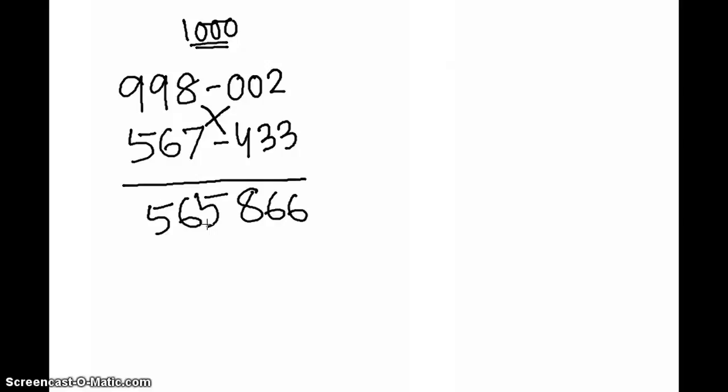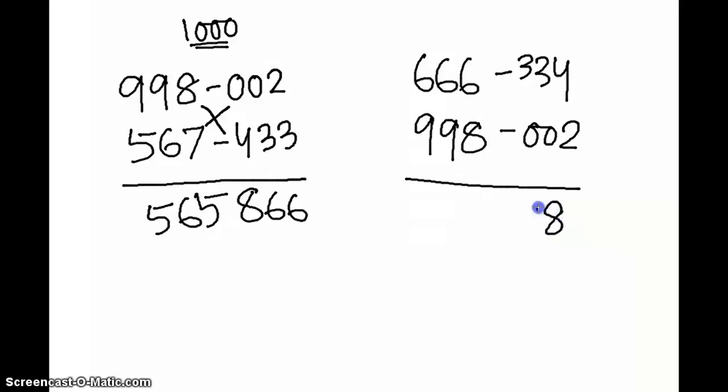Let's take out another example to demonstrate this. We can take up 666 into 998. How less it is? 334 and this is 002. So once you multiply this, this comes to 668. And 666 minus 002 which gives me 664.